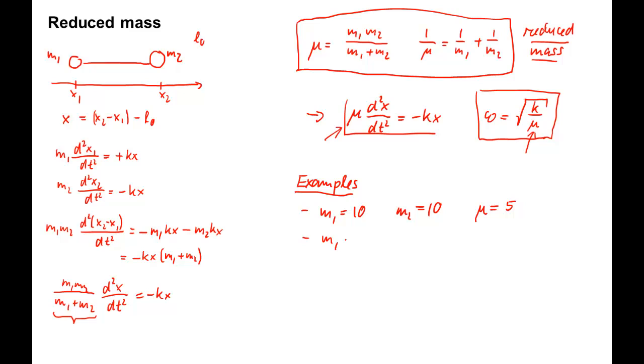If one mass is smaller than the other mass, m1 is 10 and m2 is, let's say, 4, mu gets smaller, 2.8 in this case. Note that it is smaller than the smaller of the two masses.